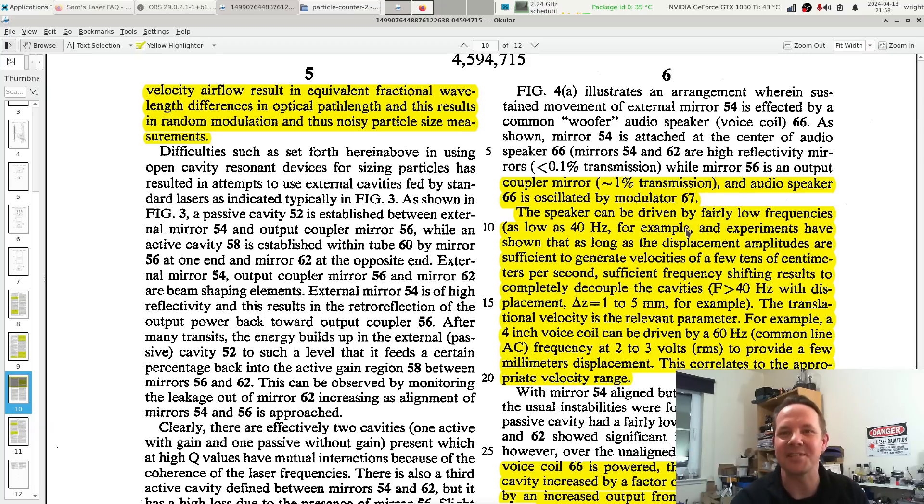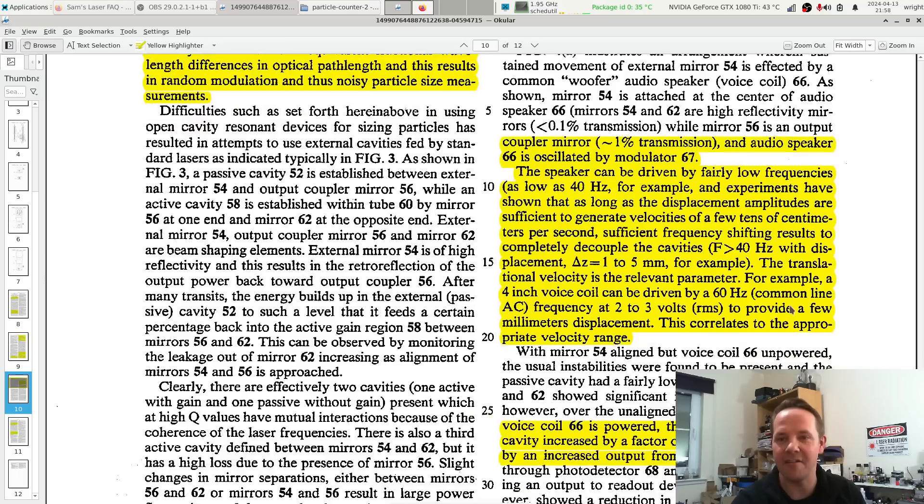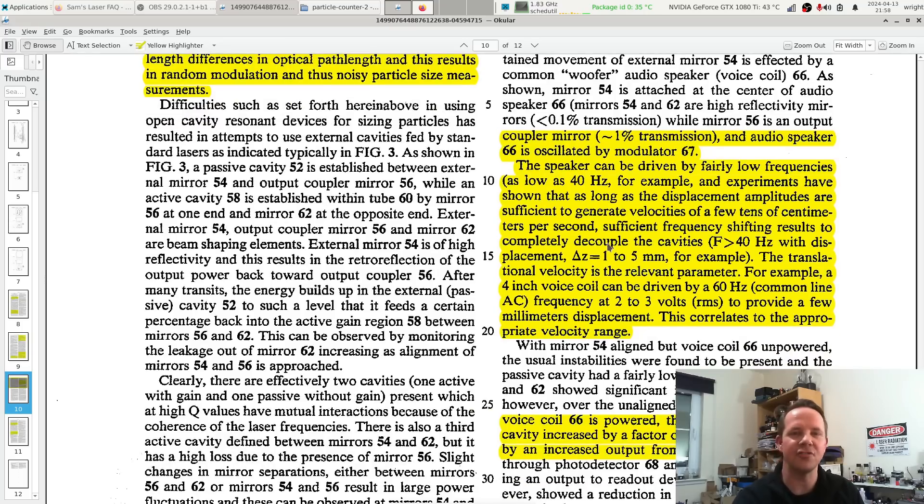Further down in the patent is where the magic is described. This patent is detailed enough that you could probably go away and build this thing. Essentially, what they did with the third mirror is mounted it on a speaker in early experiments, and they just oscillated the speaker backwards and forwards. The speaker can be driven by fairly low frequencies—40 hertz, for example. Experiments have shown that as long as the displacement amplitudes are sufficient to generate velocities of a few tens of centimeters per second, sufficient frequency shifting results to completely decouple the cavities.